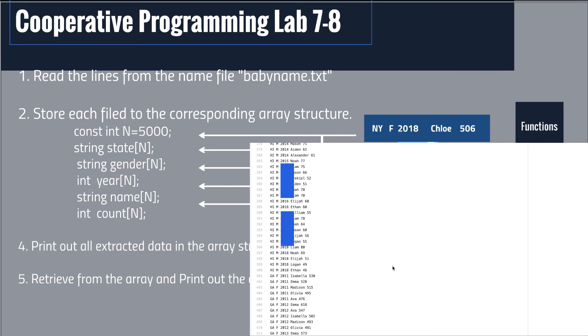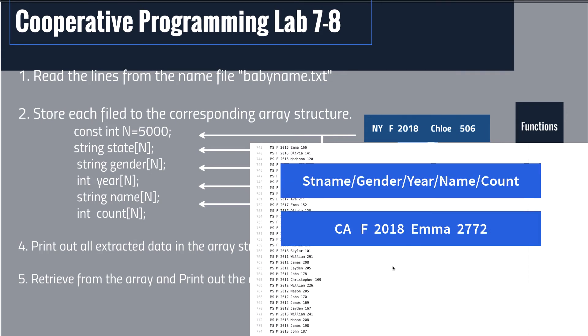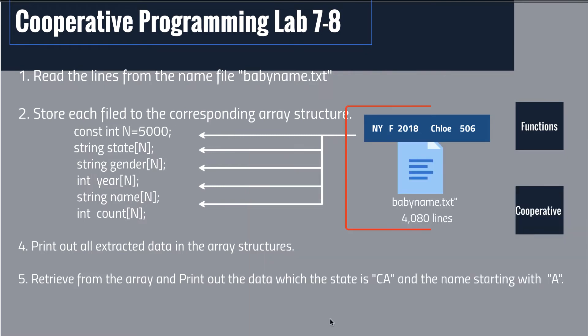This file contains 4,080 lines and each line consists of five fields: the state name, gender, year, name, and the count used for that year. We're going to read all lines from the file and store each field into corresponding arrays. We declare five arrays for each field with a size of 5,000.